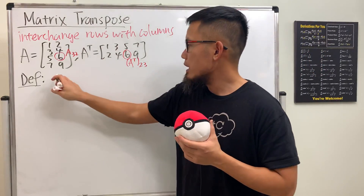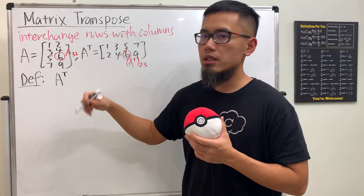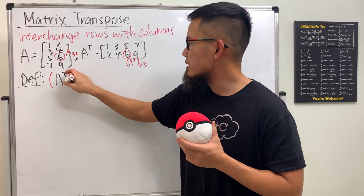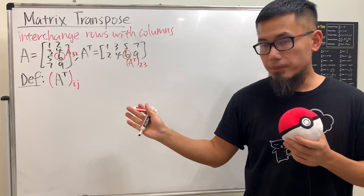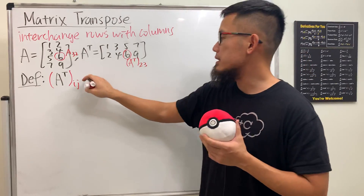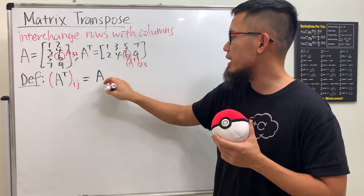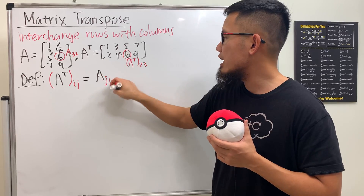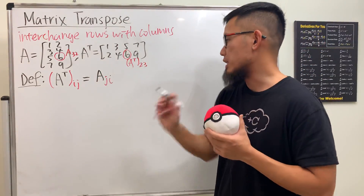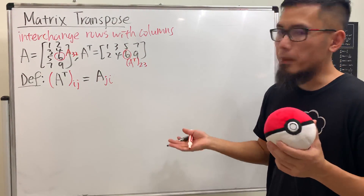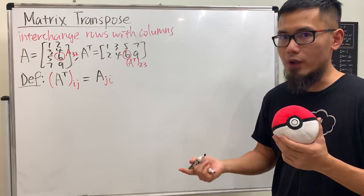So here's the deal. If you have A transpose and look at its I, J entry, it's actually the same as looking at the A matrix at the J, I entry. This right here is the key. And there are some properties — I'm going to write down a few of them and prove one for you.